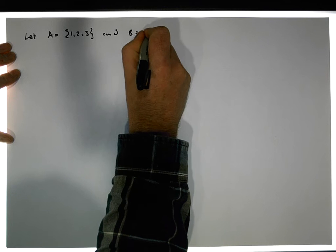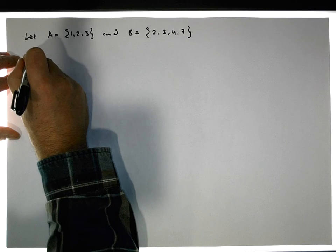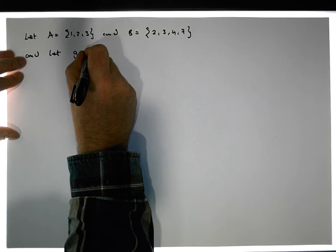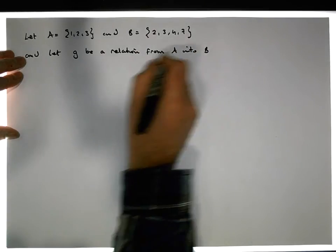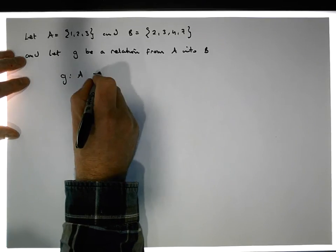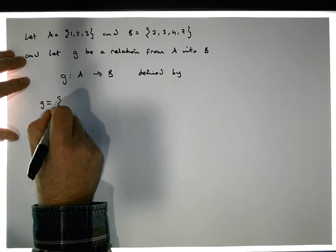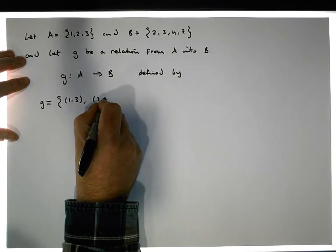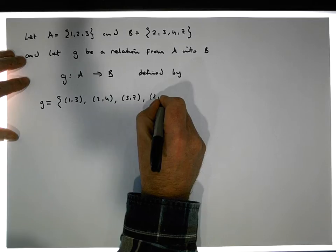Let's consider another example. Once again, let A be the set {1, 2, 3} and B be the set {2, 3, 4, 7}. Let g be a relation from A into B, defined by the set of ordered pairs: one is taken to three, two is taken to four, three is taken to seven, and two is also taken to seven.